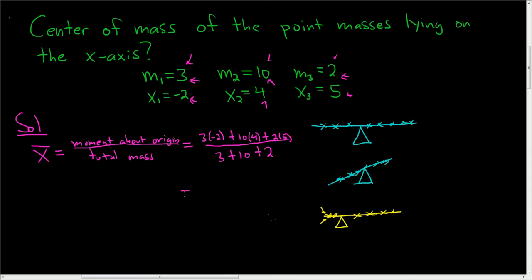So this is equal to negative 6 plus 40 plus 10, divided by 3 plus 10 is 13, plus 2 is 15. So we end up with 15.